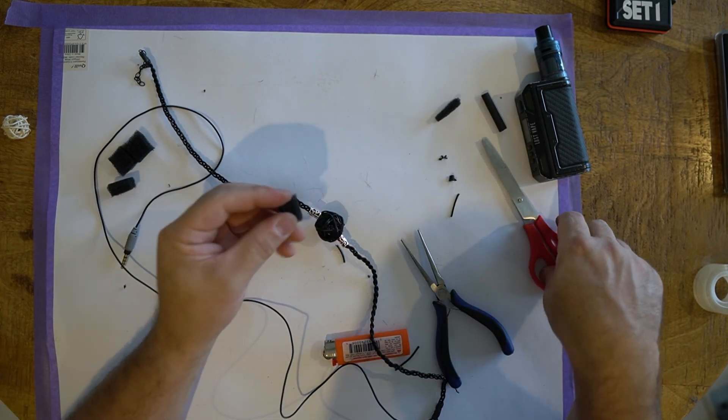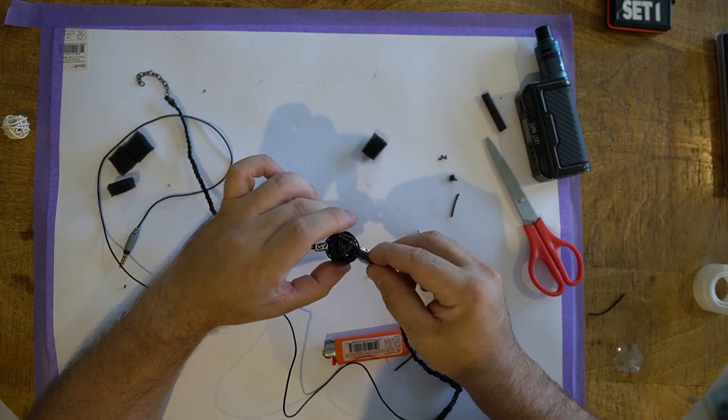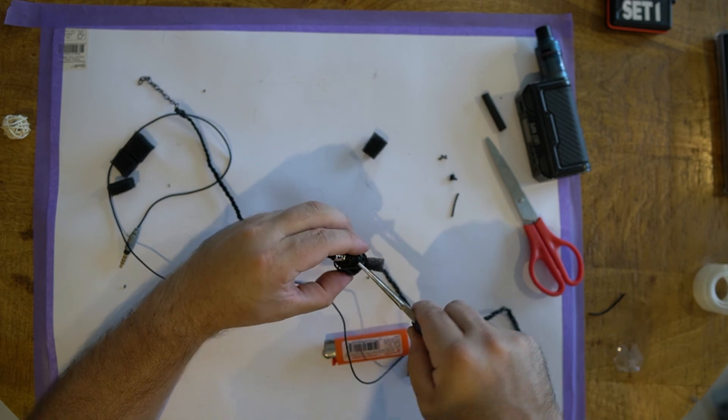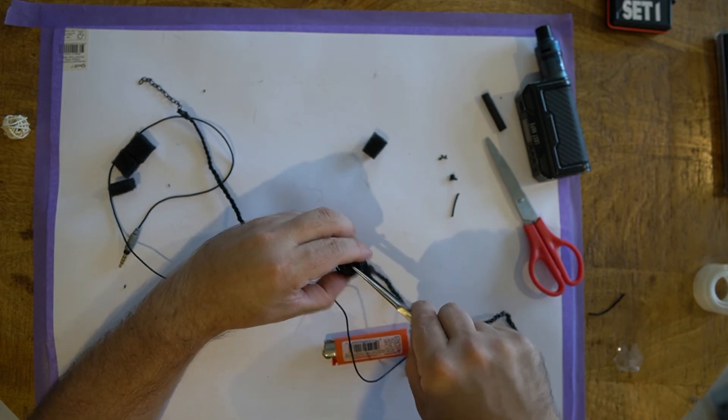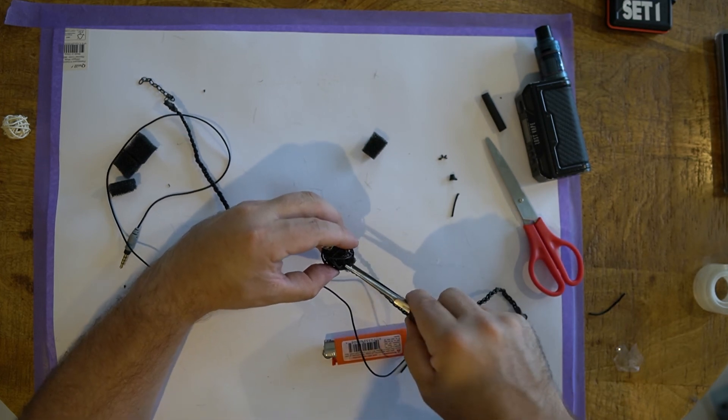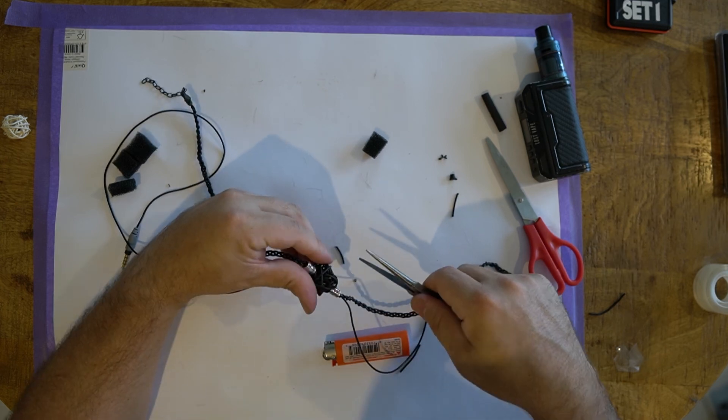This bit was trial and error, because obviously you don't want too much - it's going to get really muffled. But I just had a look at the internal volume and tried to cut a bit of foam that had the same size.